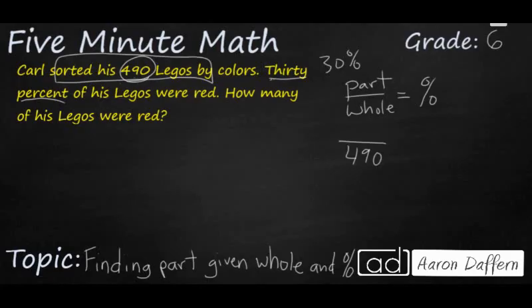And that equals 30% of his Legos were red, so that is going to be our percent here, 30% is red. So really what we're looking for is the part. What part of his whole was red? So we have our missing number right here.